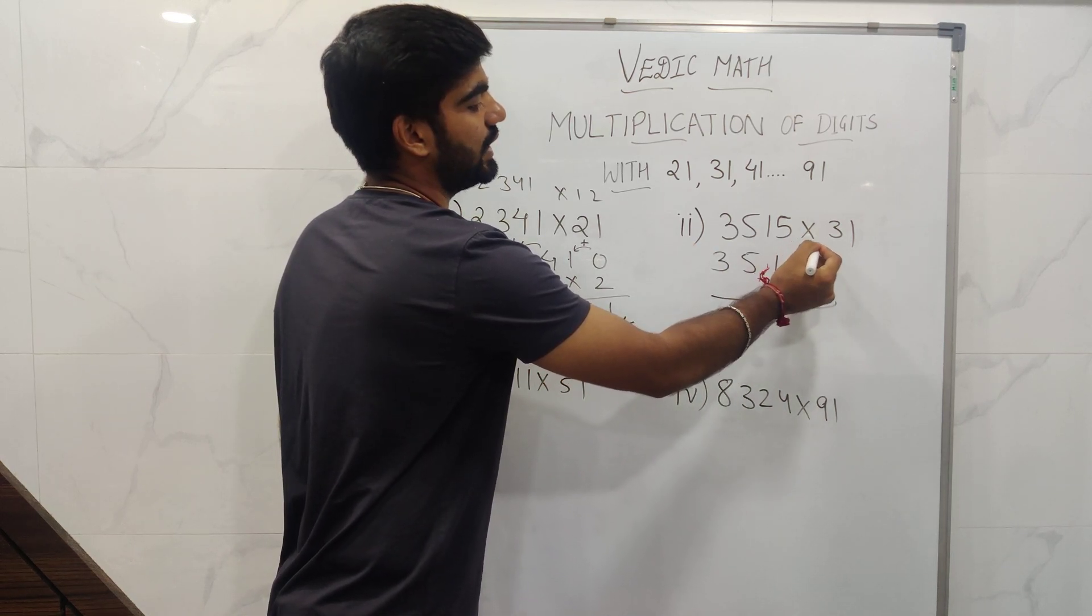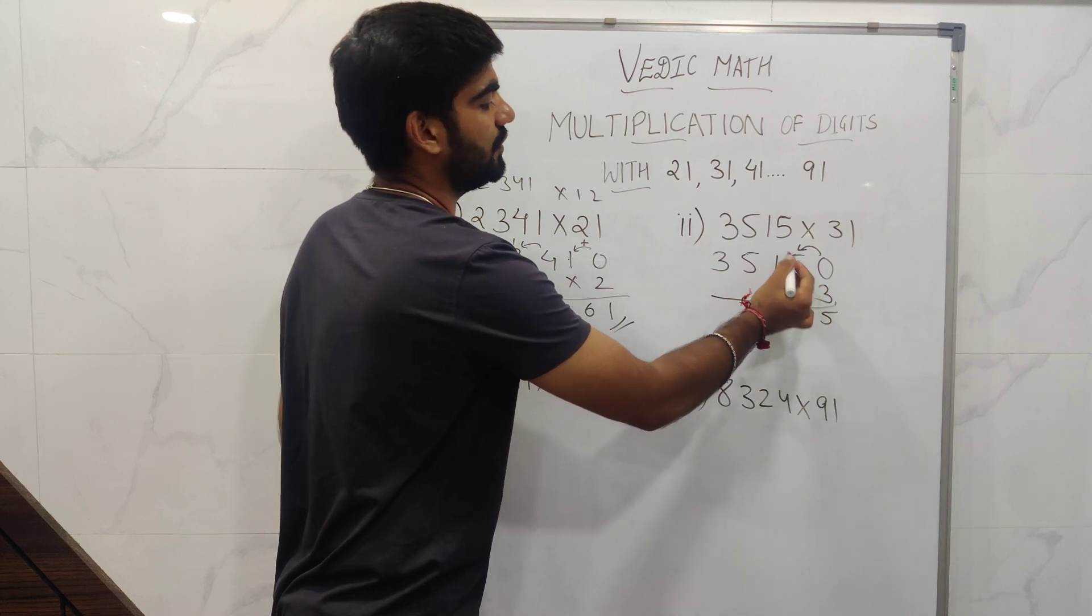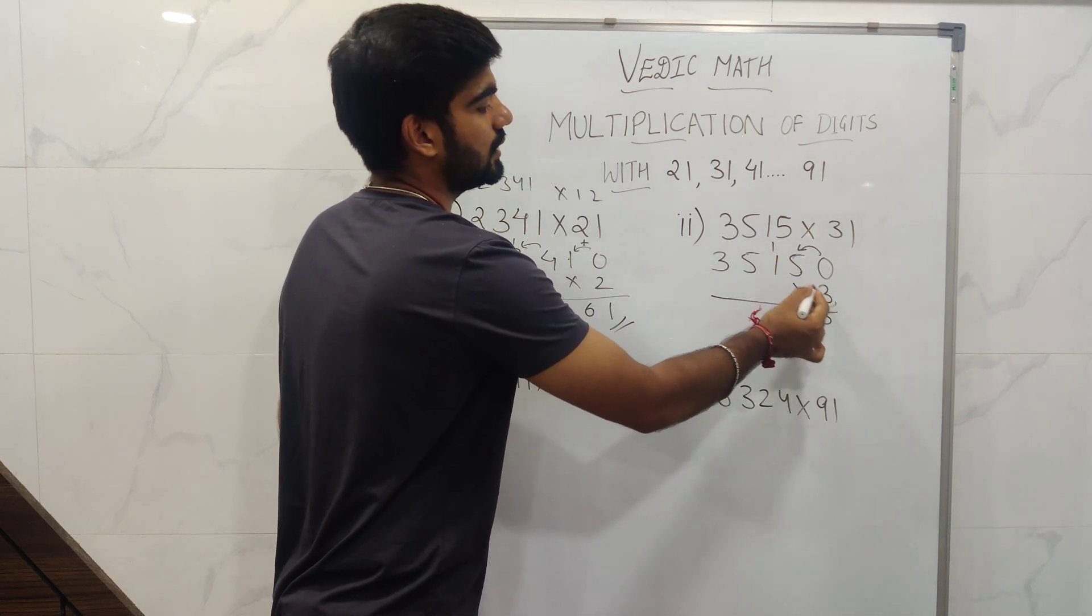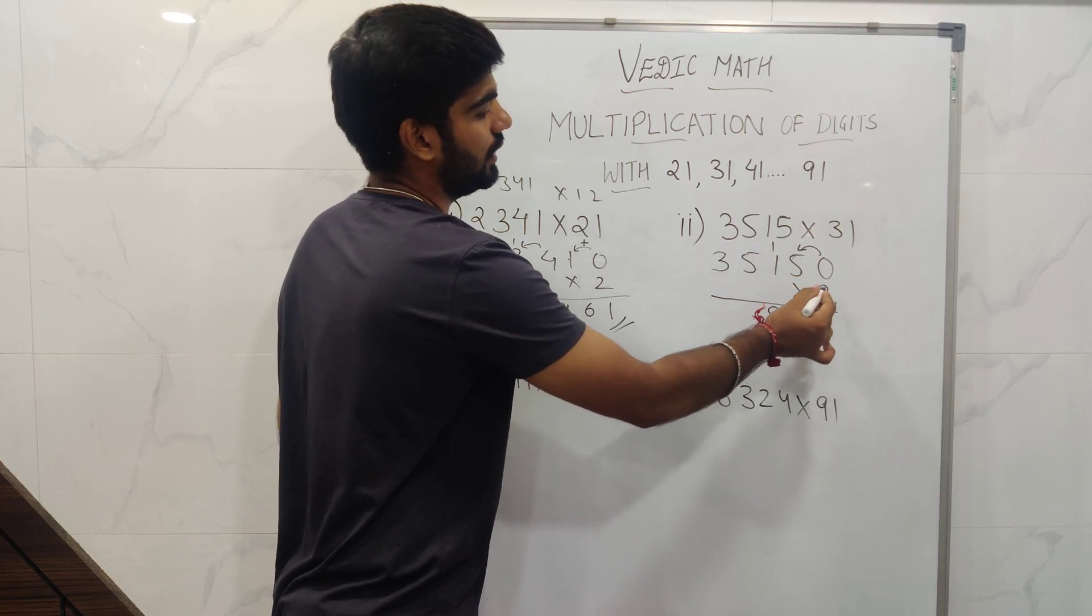What about this? 3 into 5 is 15, 15 plus 1 is 16. 3 times 1 is 3, 3 plus 1 is 4, 4 plus 5 is 9.